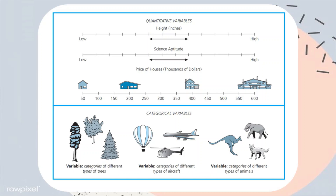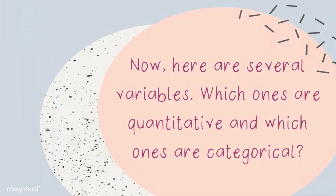Furthermore, examples of categorical variables include trees, aircrafts, animals, eye color, gender, religious preferences, occupation, position on a baseball team, and most kinds of research treatments or methods.